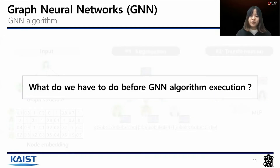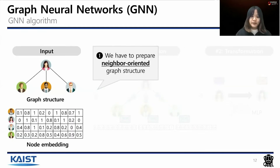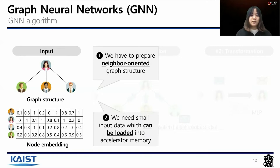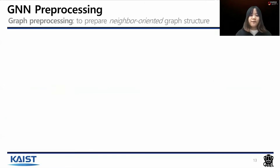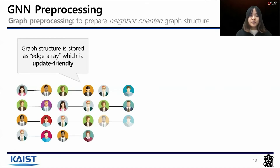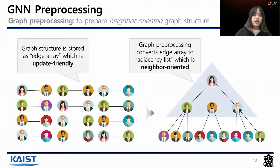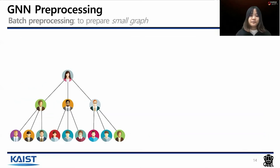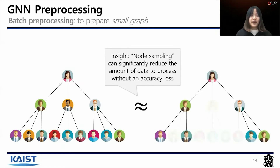What do we have to do before GNN algorithm execution? First, we have to prepare a neighbor-oriented graph structure for embedding aggregation. Second, we also need small input data which can be routed into the accelerator memory. Thus, GNN preprocessing first performs graph preprocessing to prepare the neighbor-oriented graph structure. The graph structure is stored as an update-friendly edge array, then graph preprocessing converts the edge array to a neighbor-oriented adjacency list. After that, GNN preprocessing performs batch preprocessing to prepare the small graph. The insight is that node sampling can significantly reduce the amount of data to process in GNN without an accuracy loss, and it samples both graph structure and embedding.